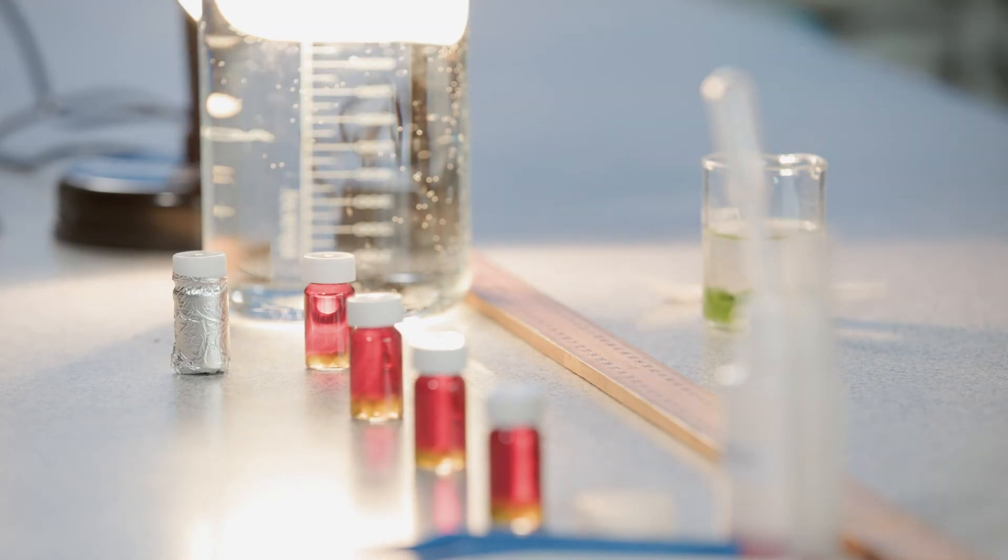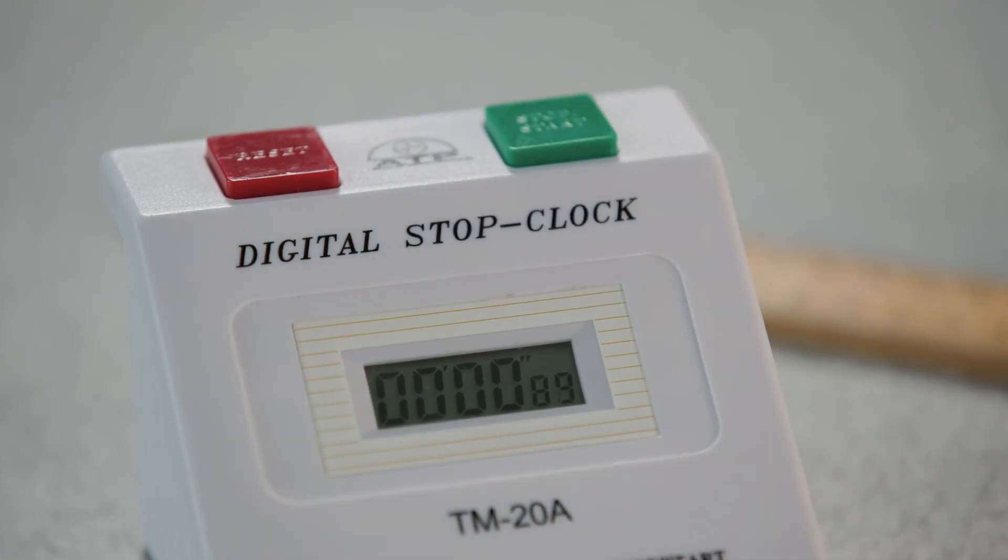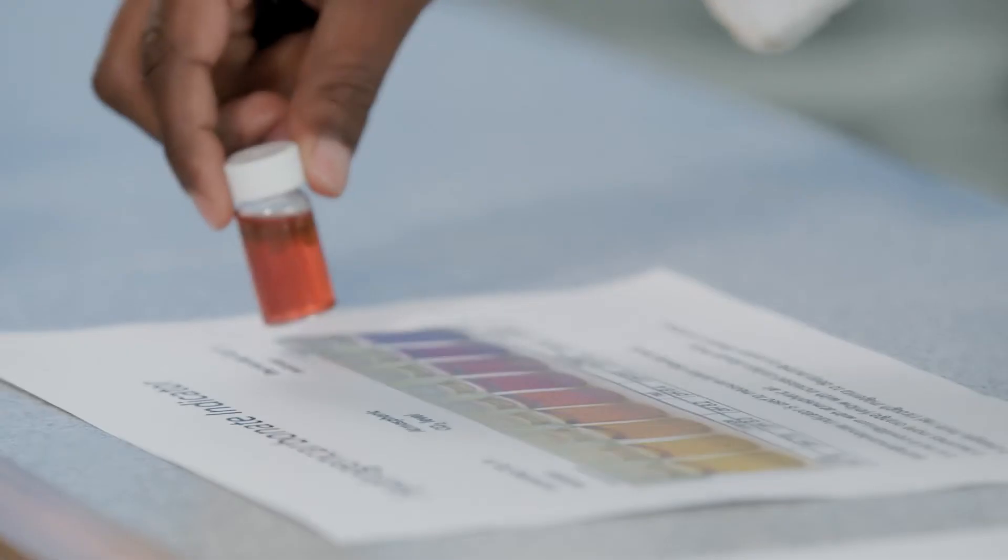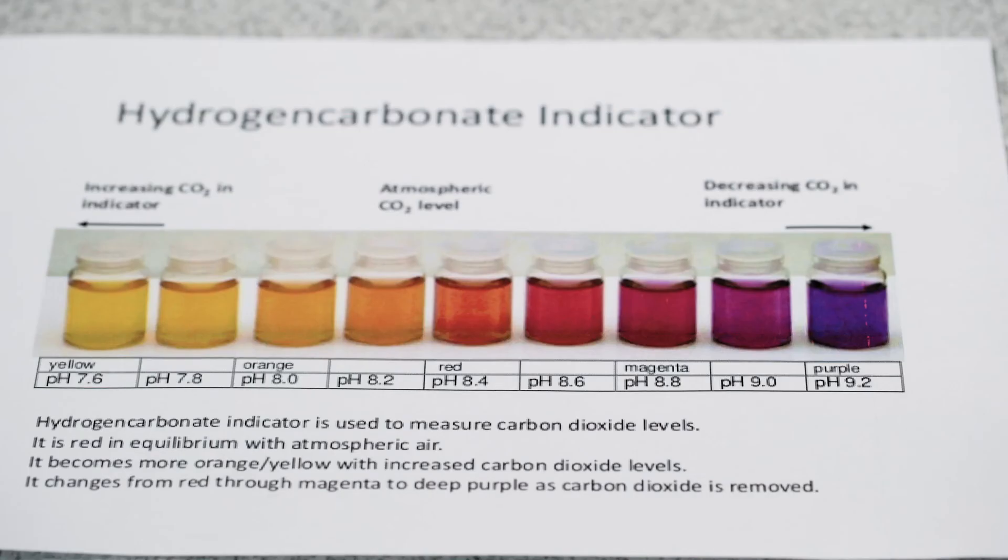Turn on the lamp and time 60 minutes or longer. Compare the colors of all your bottles with those on an indicator scale.